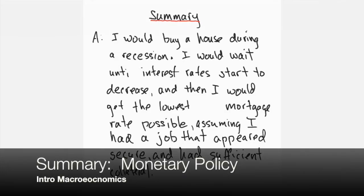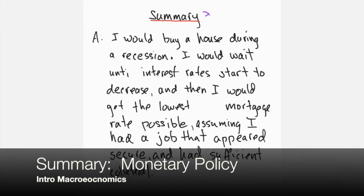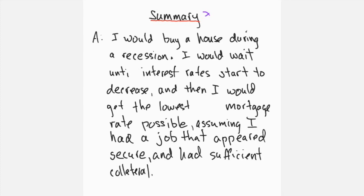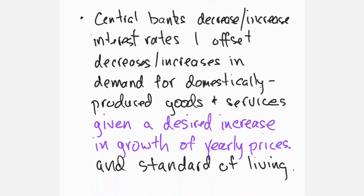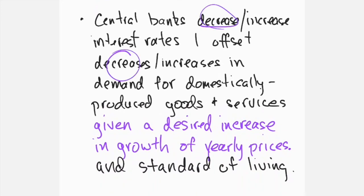In response to the question of buying a house during a recession, one would wait until interest rates started to decrease and then get the lowest fixed mortgage rate possible, assuming a secure job and sufficient collateral. Central banks decrease or increase interest rates to offset decreases or increases in demand for domestically produced goods and services, given a desired increase in growth of yearly prices and the standard of living.